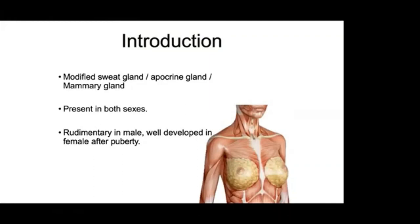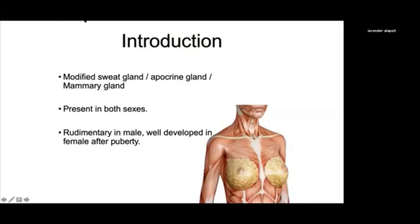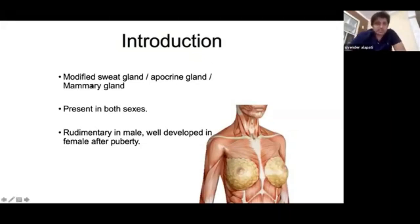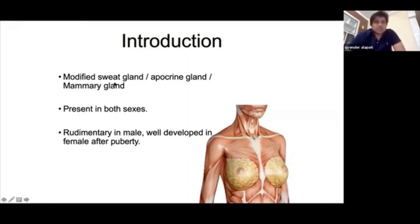The first slide is regarding anatomy. The first line has been asked at least 15 to 20 times: breast is a modified sweat gland, or apocrine gland, or mammary gland — always remember this. In the options, you will get either sweat gland or apocrine gland, but not both options simultaneously. It is present in both sexes.